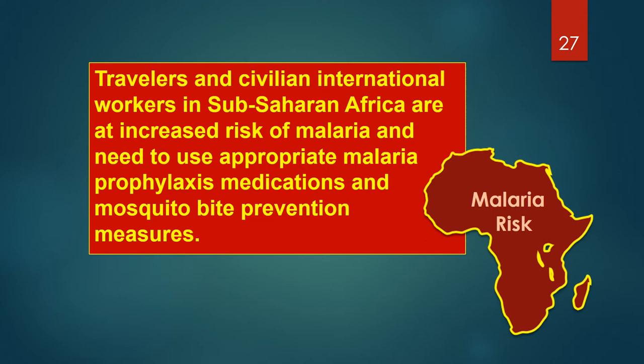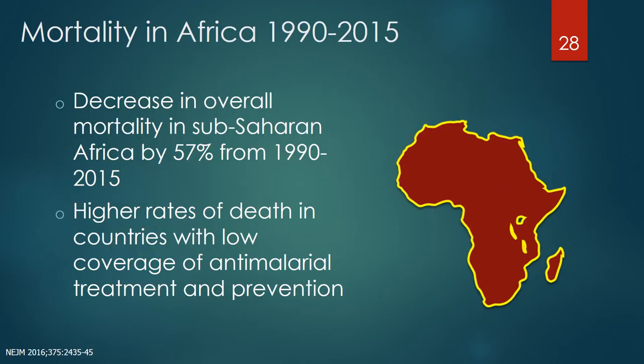Travelers and civilian international workers in sub-Saharan Africa are at increased risk of malaria and need to use appropriate malaria prophylaxis medications and mosquito bite prevention measures. Data from Gething et al. published in the New England Journal of Medicine in 2016 showed a decrease in overall malaria mortality in sub-Saharan Africa by 57% from 1990 to 2015. Higher rates of death were seen in countries with low coverage of anti-malarial treatment and prevention.